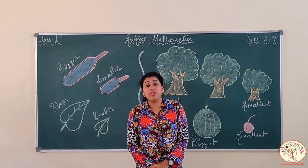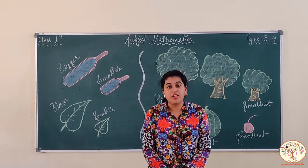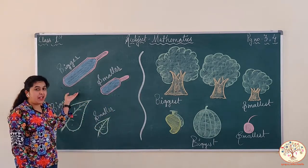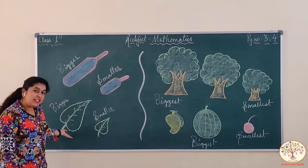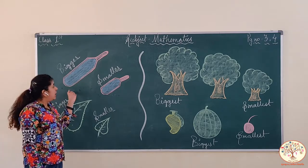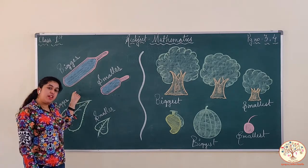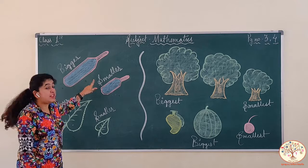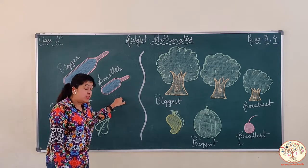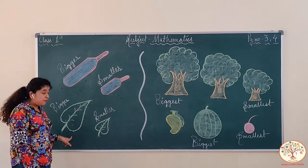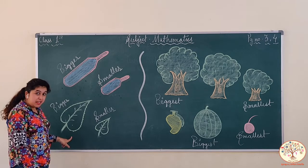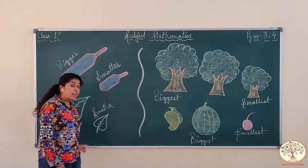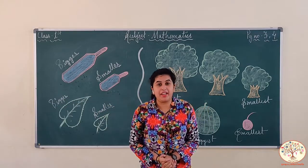In the previous class, we have already learned the concept of big and small. So let's revise. What are these? Bats. And what are these? These are leaves. Between two bats, which one is big and which one is small? This one is big and this one is small. Similarly, between each two leaves, which one is small and which one is big? This one is small and this one is big. That's what the concept of big and small is all about.